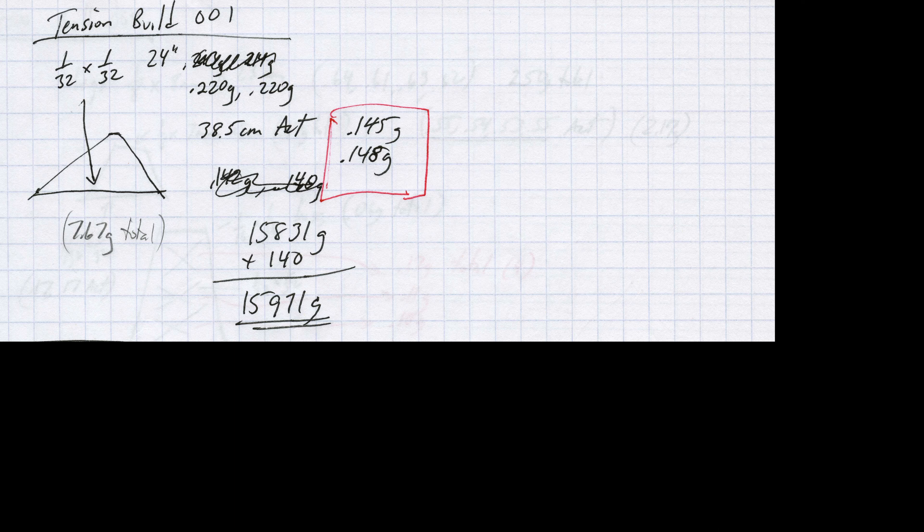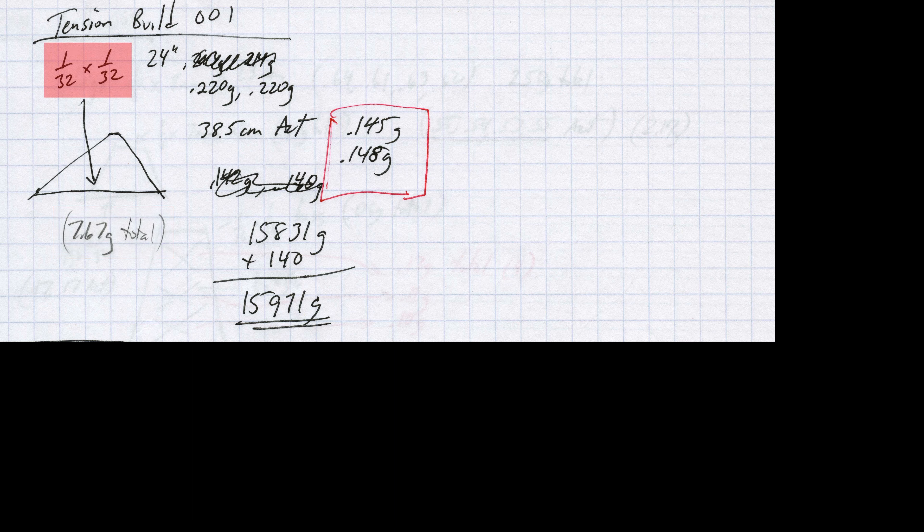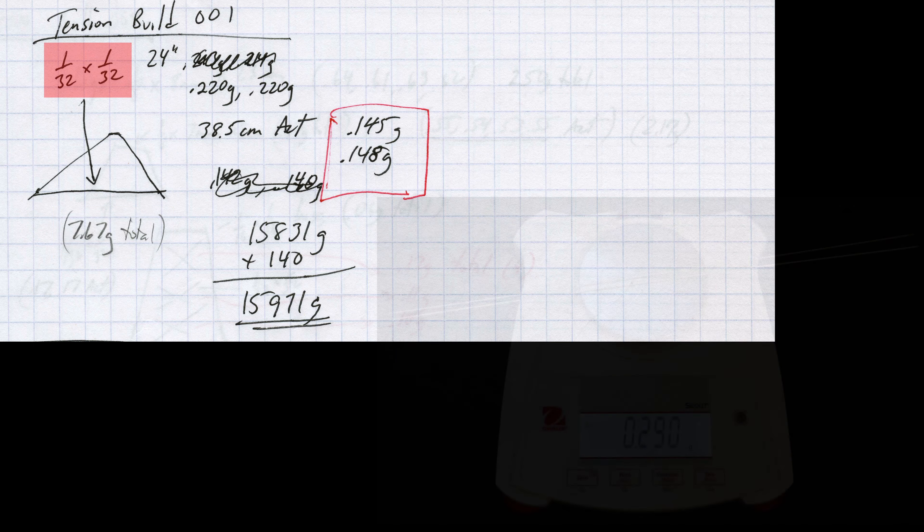Here are my notes from my second build and labeled here as tension build number 1. I built a very strong bridge with over-designed parts and coupled that with what I thought would be the minimum possible tension pieces. In this case it was 1/32nd by 1/32nd bass and the combined weight was 0.29 grams.